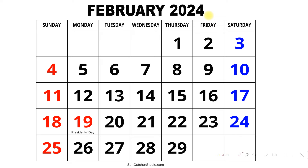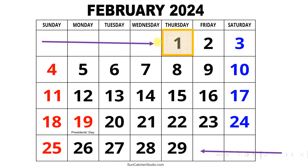Now you can try by yourself. What is the first day? There are these empty days before it, so the first day starts from Thursday — the first day is Thursday. Second question: what is the last day? The last date is 29, and the last day is also Thursday.